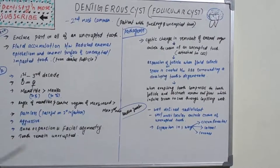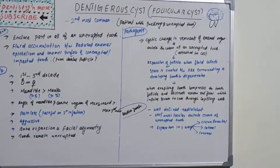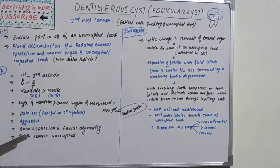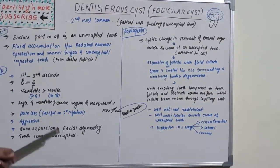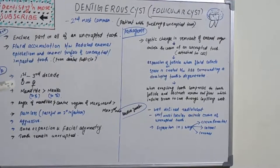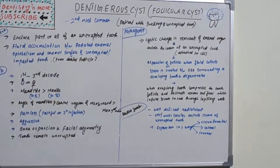The most common site is the angle of the mandible and the least common site is the maxillary third molar area. It is usually a painless cyst but becomes painful with secondary infection. It is an aggressive lesion, causing bone expansion and facial asymmetry as it mostly affects the mandibular posterior region. The associated tooth remains unerupted because the cyst covers the tooth crown, connecting at the cemento-enamel junction.